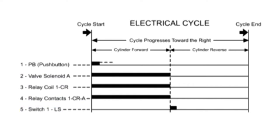To build a sequence diagram, each major component is assigned a horizontal line. The width of the line shows the time period during the cycle that each component is actuated or energized.